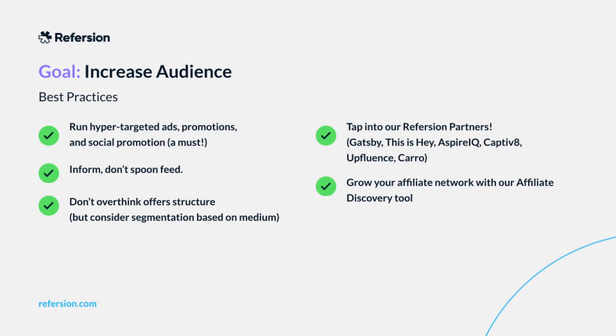Refersion also offers resources for finding influencers and affiliates. We work with carefully selected and curated partners — other companies that specialize in a variety of things depending on your needs, such as helping you identify people on social media who might be talking about your product and who might be good fits for your type of product. Some of these companies include Gatsby, This Is Hey, Aspire IQ, Captivate, Upfluence, and Caro.